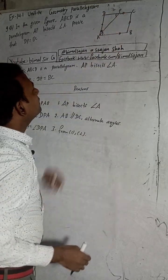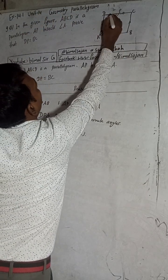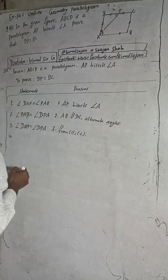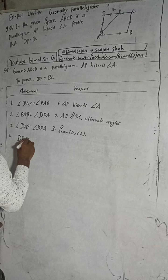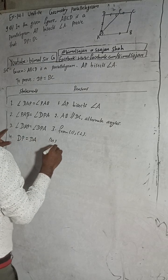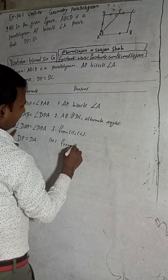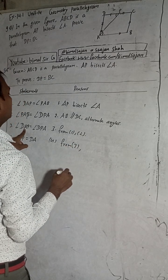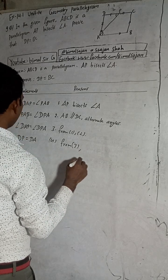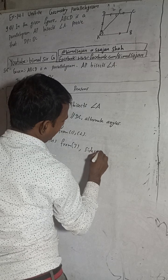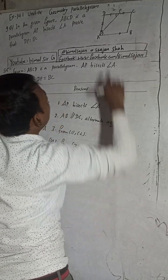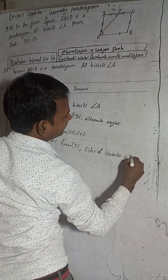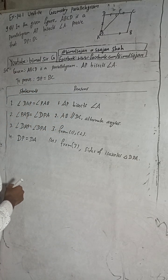When these two angles are equal, this makes triangle DPA an isosceles triangle. So the sides opposite the equal base angles are equal: DP is equal to DA. The reason is from statement 3 — the sides of an isosceles triangle opposite equal angles are equal. So DP is equal to DA.